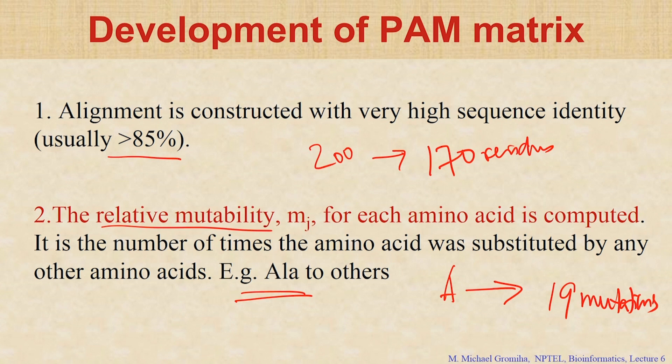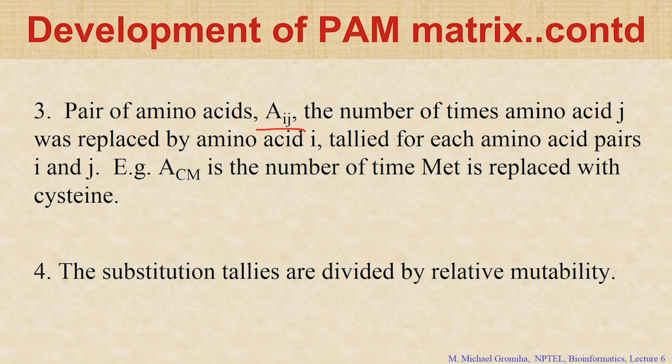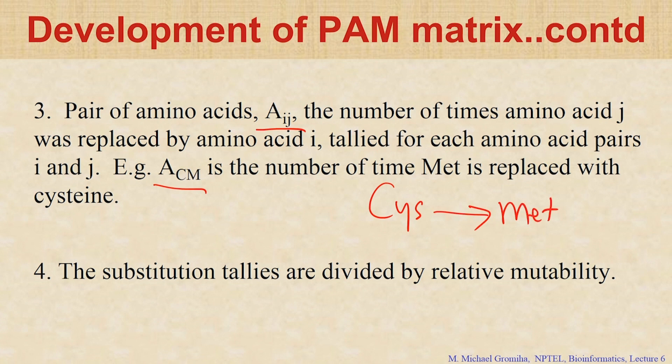The second aspect: how far alanine is mutated to a specific residue — alanine can make 19 possible substitutions. What is the possibility of mutating alanine to glycine, or alanine to lysine? Get sequences with 95 percent sequence identity, check them, and see how far they are aligned. This is A_ij — for example, A_cm means how many times cysteine is mutated to methionine. This specific mutation depends on how many times cysteine occurs in the sequence and how many times it is mutated to other residues.